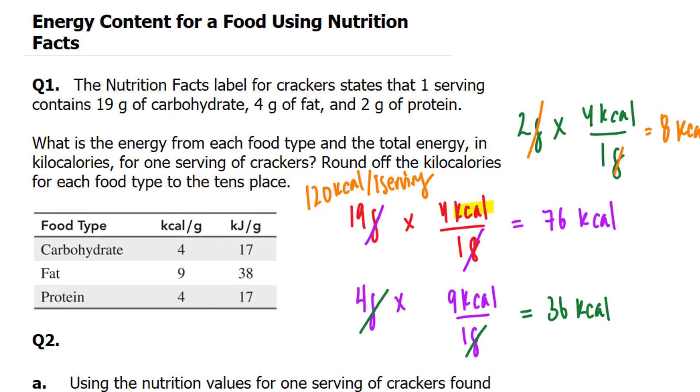Now interestingly, they did ask us to round off the kilocalories for each food type to the tens place. So with that being said, we could have also rounded this, given that 6 is in the ones column and 7 is in the tens column. This is greater than 5, so this 7 would have become an 8, 80.